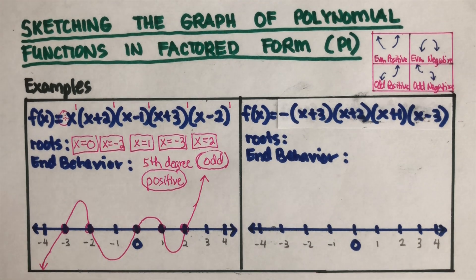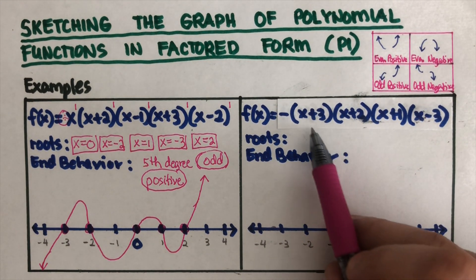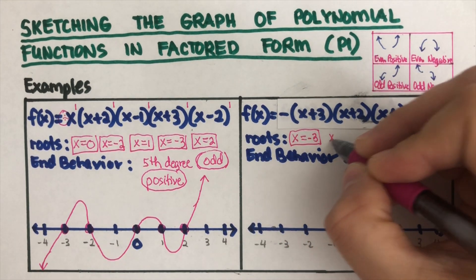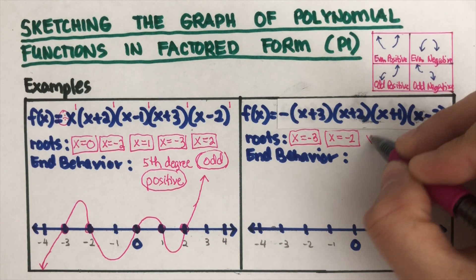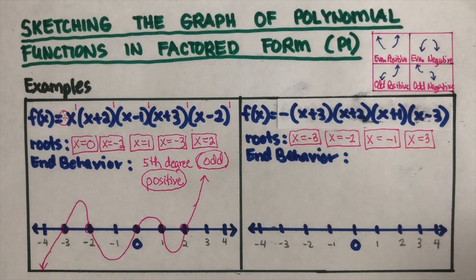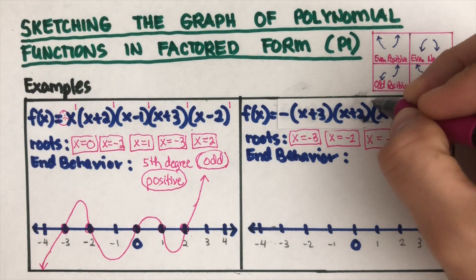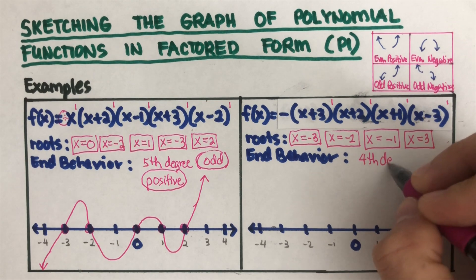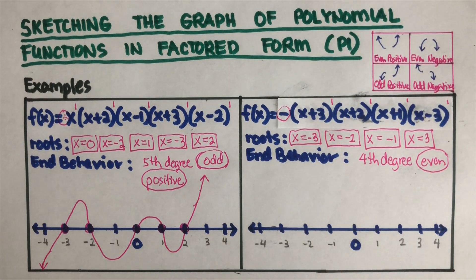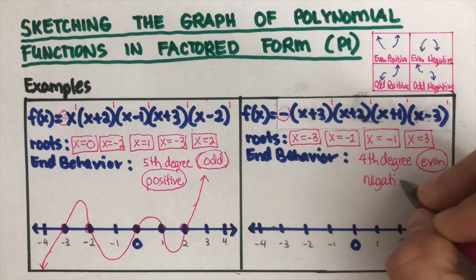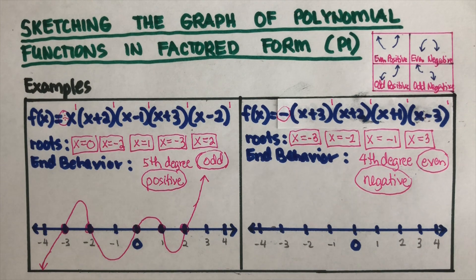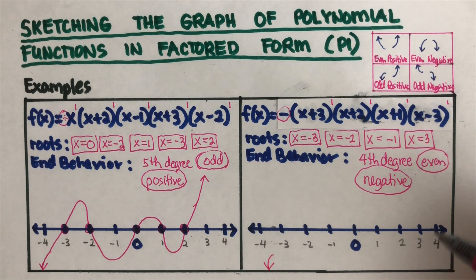Let's do the second example. We find the roots using the zero product property: x equals negative three, x equals negative two, x equals negative one, and x equals positive three. Each factor has an exponent of one, so this is fourth degree — that's even. The leading coefficient is negative, so this is an even negative graph, meaning both ends go down.